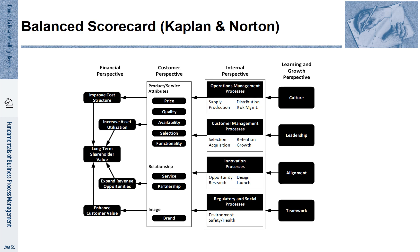It distinguishes four different perspectives. On the left-hand side, you see that all the arcs in this diagram point towards long-term shareholder value. This is often, for many companies, one of the major financial goals. There are various goals that contribute towards this overarching goal in the financial perspective, such as improving the cost structure, increasing asset utilization, expanding revenue opportunities, and enhancing customer value.